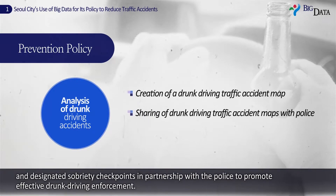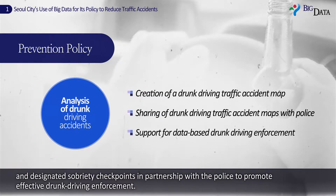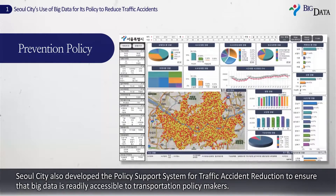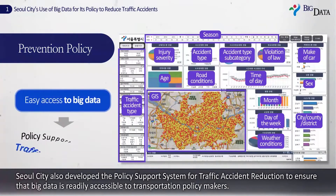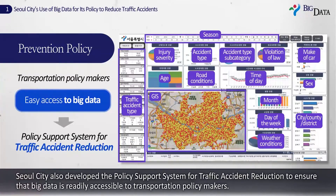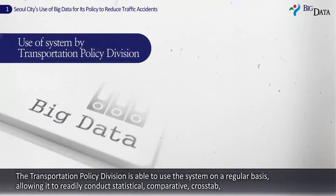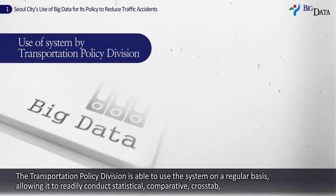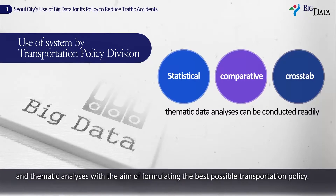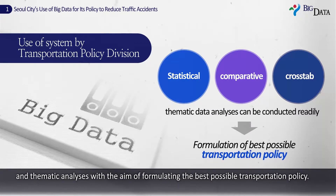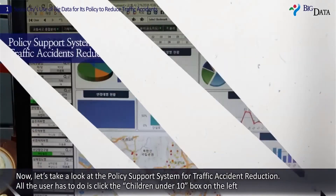Seoul City also developed the Policy Support System for Traffic Accident Reduction to ensure that big data is readily accessible to transportation policymakers. The transportation policy division is able to use the system on a regular basis, allowing it to readily conduct statistical, comparative, cross-tab, and thematic analyses with the aim of formulating the best possible transportation policy.